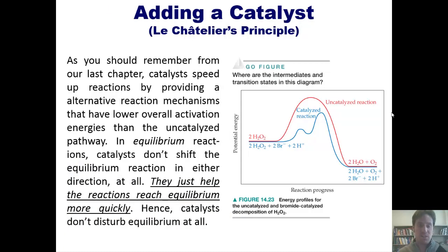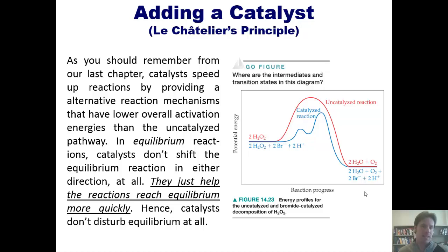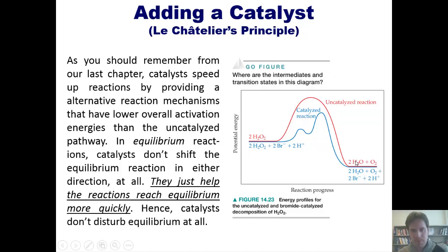We'll now discuss how adding a catalyst affects an equilibrium reaction. As you should remember from our last chapter, catalysts speed up reactions by providing an alternative reaction mechanism that has a lower overall activation energy than the uncatalyzed pathway. In an equilibrium scenario, the only thing a catalyst does is provide an alternative pathway that's lower in energy and therefore faster. So all that happens is that the back-and-forth reaction happens faster if I add a catalyst, but it doesn't change the relative amounts or disturb equilibrium at all.